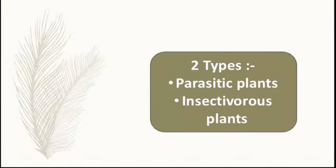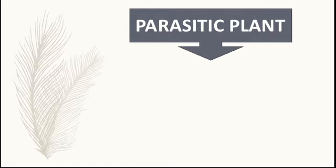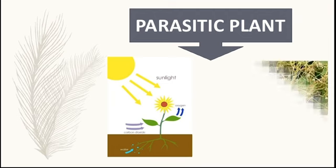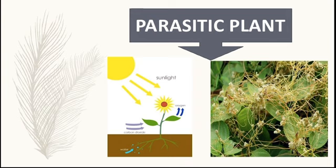There are two types: parasitic plants and insectivorous plants. Parasitic plants have a special root using which they absorb food and water from other plants. Cuscuta is one example of a parasitic plant.